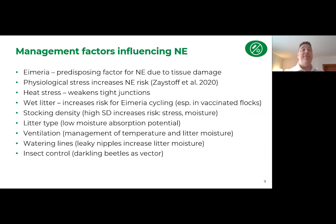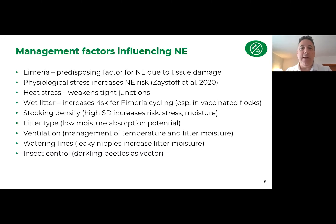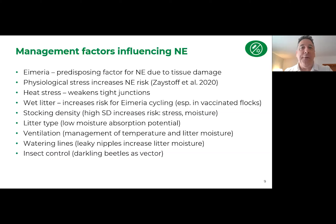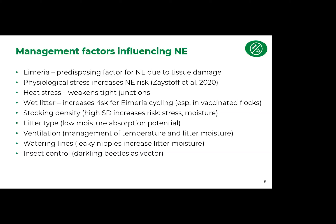Litter type, ventilation, and watering lines are all related to factors that help reduce overall moisture in your barn and predisposing conditions. Also important is having a good insect control strategy — darkling beetles are a known vector for transmitting Clostridium perfringens, so making sure you have good insect control in your barns is another key factor.